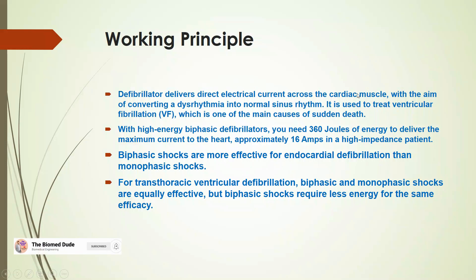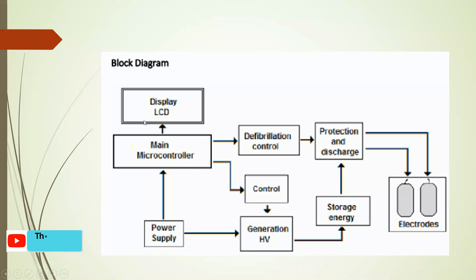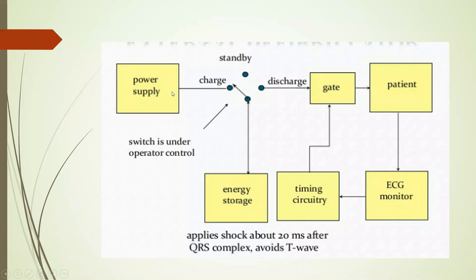The working principle of the defibrillator: a defibrillator delivers direct electrical current across the cardiac muscles with the aim of converting an arrhythmia into a normal sinus rhythm. It is used to treat ventricular fibrillation, which is one of the main causes of sudden death. Here is the block diagram where we can understand how the defibrillator works — the display, LCD, main controller system, and power supply provide voltage to the main controller, the generator, and energy storage. There is also a protection and discharge circuit and an electrode that delivers the shock to the patient.